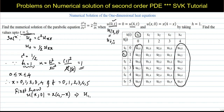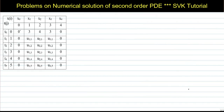Substituting x=1: u(1,0) = 1×(4−1) = 3. Substituting x=2: u(2,0) = 2×(4−2) = 4. Substituting x=3: u(3,0) = 3×(4−3) = 3. So the first row values are 3, 4, 3. The first and last columns are filled with 0.